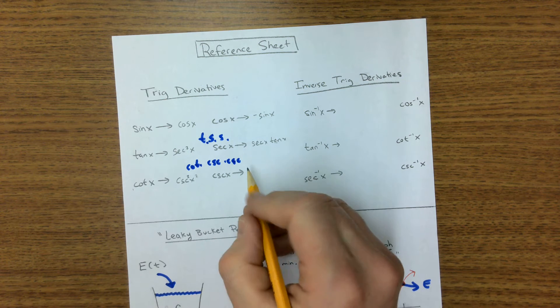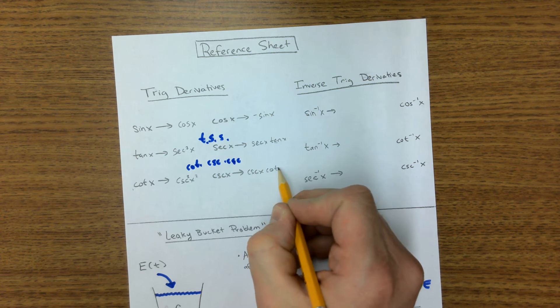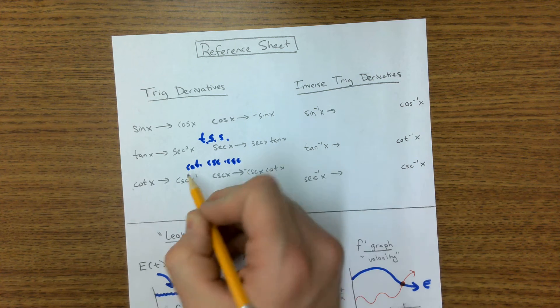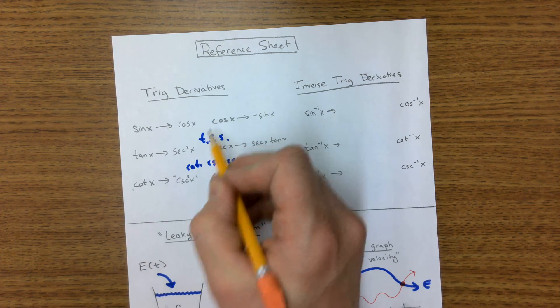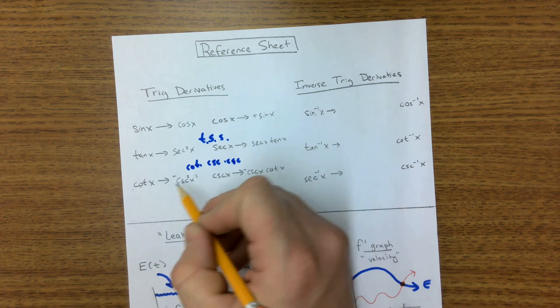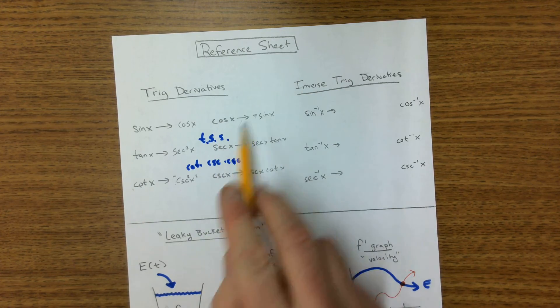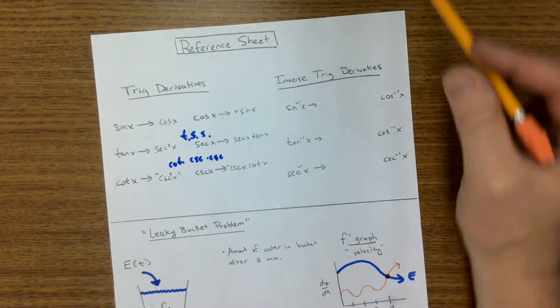But the problem here is these need to be negative. All of the ones that start off with a C have negative answers. There's a negative here, here, here, all of the ones that are the co-functions. So negative, negative, negative.